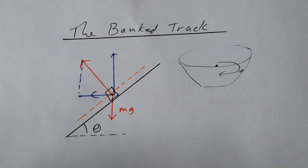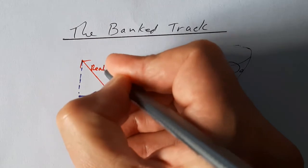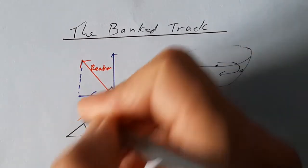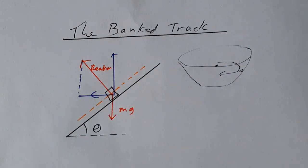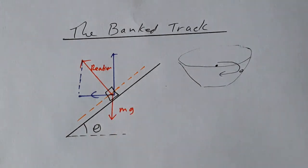So there are actually only two forces if we ignore friction, and in physics A-level we are going to ignore friction in this instance. We're going to have a reaction force acting perpendicular to the surface. It's perpendicular to the surface because there's no friction. And we're going to have a weight mg acting down.